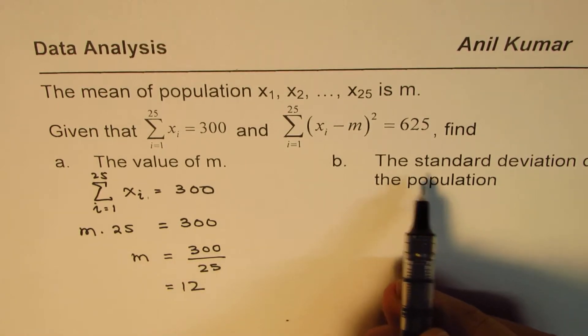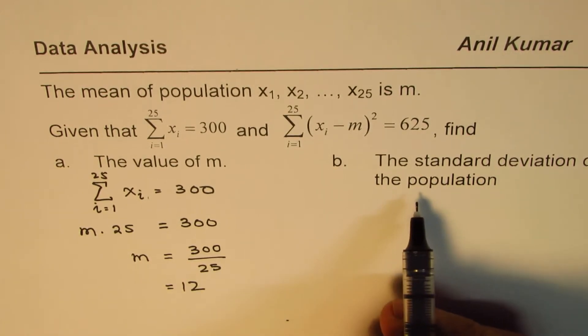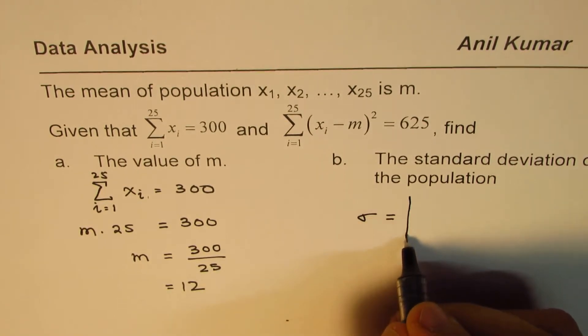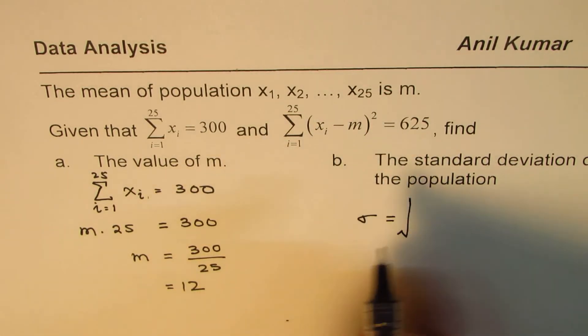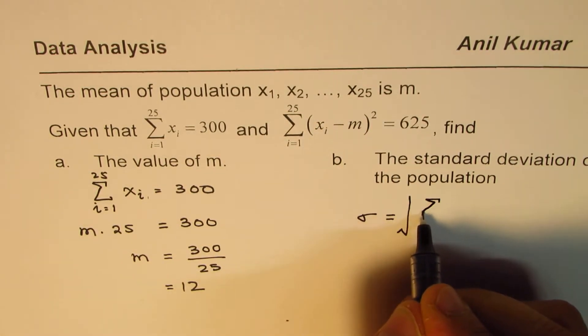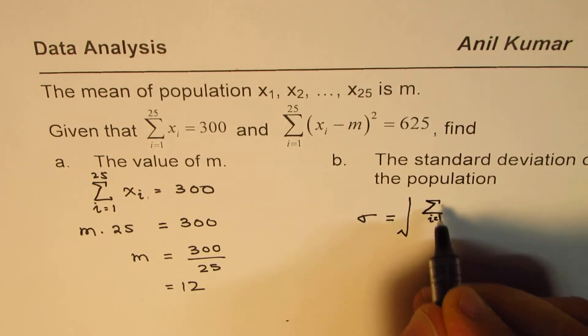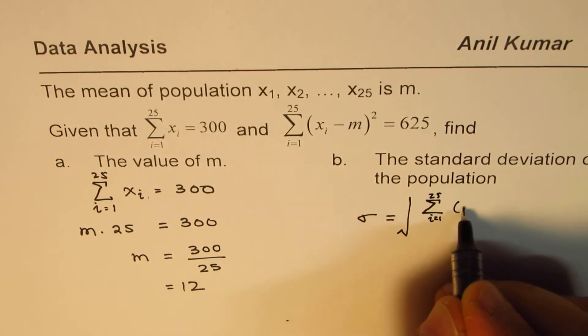Now part b is to find the standard deviation of the population. For standard deviation of the population, the formula is square root of the square of the variance, so it is i equals 1 to 25.